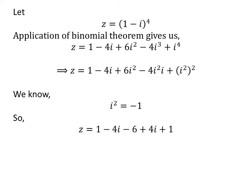Application of the above fact gives us z = 1 - 4i - 6 + 4i + 1. Further simplification gives us z = -4.